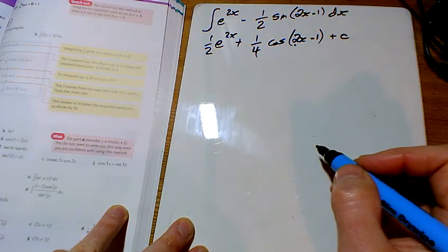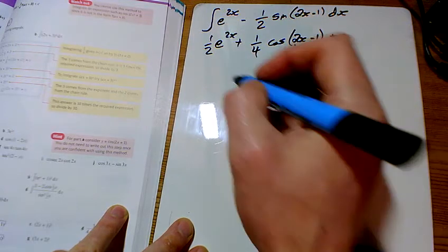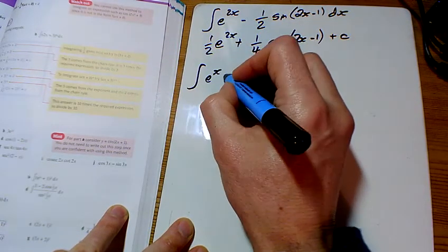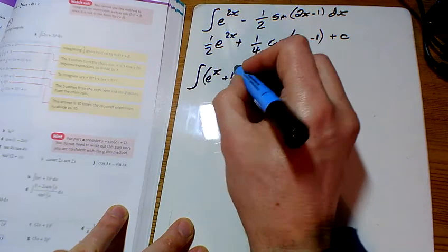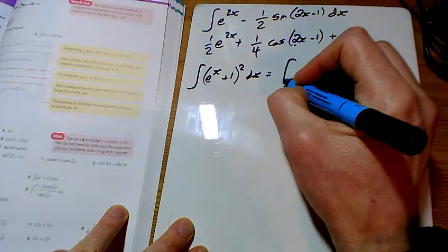Here's my first one. So now I'll do b as well. b, e to the x add 1 all squared. So I think for this one, what I'm going to do, I'm going to multiply out the bracket.